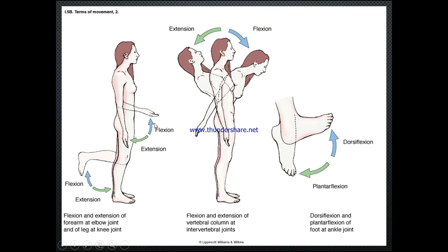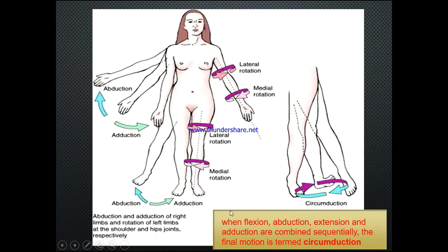We also have flexion and extension of the trunk — flexion and extension at the lower back. Flexion and extension of the foot is actually called dorsiflexion and plantarflexion. Dorsiflexion is where we dorsiflex the foot upward, and plantarflexion is where we plant the foot downward — think of the plantar surface and the dorsal surface. This occurs at the foot and ankle joint.